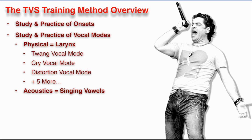The other kind of modes we have are acoustic modes. Acoustic modes are a set of 10 vowels or 10 sound colors that you will train in our integrated training routines and workouts. So vocal modes are groups of vocal techniques that are categorized and labeled to make things easier to learn and easier to teach. There are two groups: physical modes, which are laryngeal positions, and acoustic modes, which are 10 different singing vowels, sound colors, or resonances that you train with in the scales.